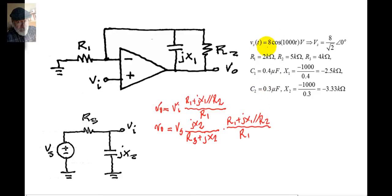So, we replace with all of those values in this expression for V0. We know Vs, this one here. We have Jx2, we have R3, et cetera. Let's do the replacement and find what is V0.